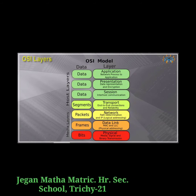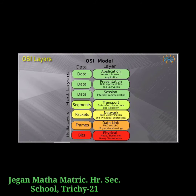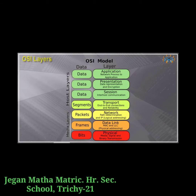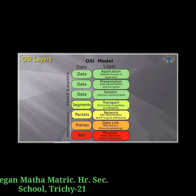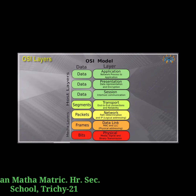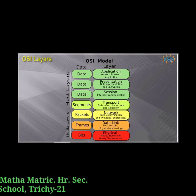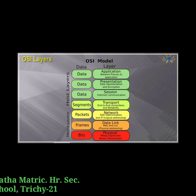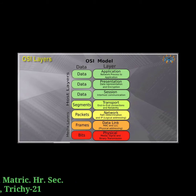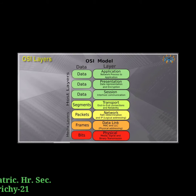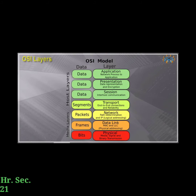The data link layer has simple protocols like 802.3 for Ethernet and 802.11 for Wi-Fi. The third layer is the network layer. It determines the path of the data packets. At this layer, the routing of data packets is found using IP addressing.